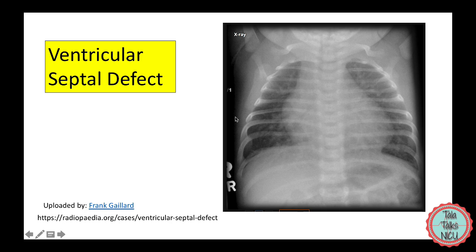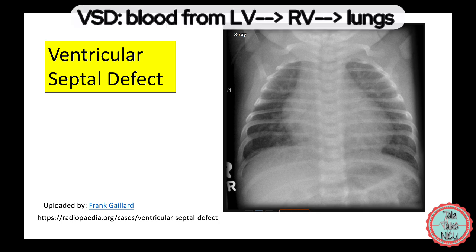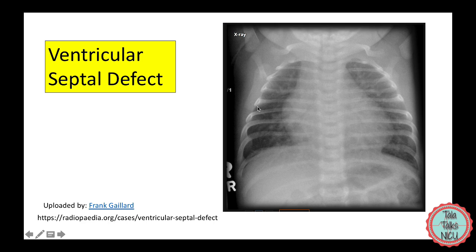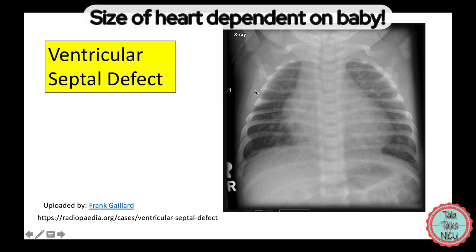A ventricular septal defect, or VSD, is another super common lesion we see in the NICU, though it may take a few weeks to become symptomatic. Too much blood travels through the hole in the wall between the ventricles — generally from the left ventricle to the right ventricle — and then goes straight into the lungs, so the lungs can appear wetter. All that extra blood returns to the left side of the heart, so the heart can look bigger. This is more relevant when following serial x-rays; we go more with what the baby actually looks like than just the heart size on the x-ray.